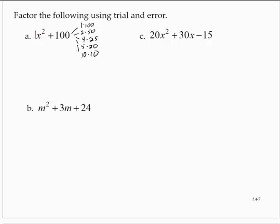Now, I would need a pair. I would need those pairs to add up to, well, there's an understood 0x here. 1 plus 100 is 101, 2 plus 50 is 52, 4 plus 25 is 29, 5 plus 20 is 25, and 10 plus 10 is 20.